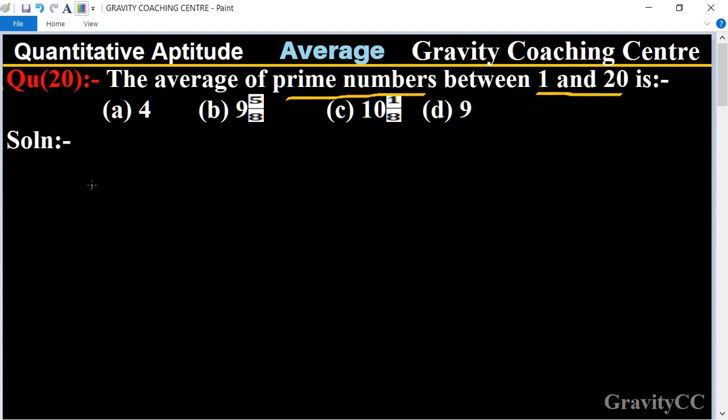So all the prime numbers are 2, 3, 5, 7, 11, 13,